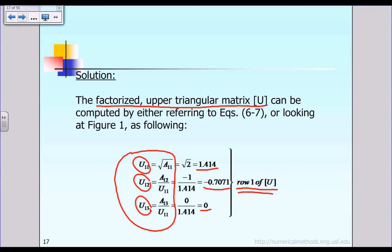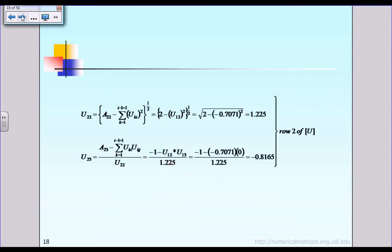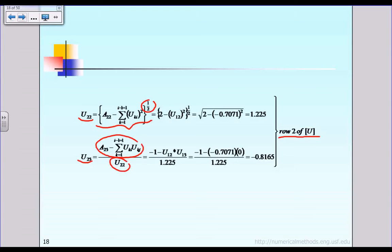After finishing row one of the factorized matrix U, we go on to calculate U22 and U23, the unknowns of row two. U22 is a diagonal term, so you must use the formula involving the square root operation. U23 is an off-diagonal term, so you compute the numerator and divide by U22 instead of taking the square root.